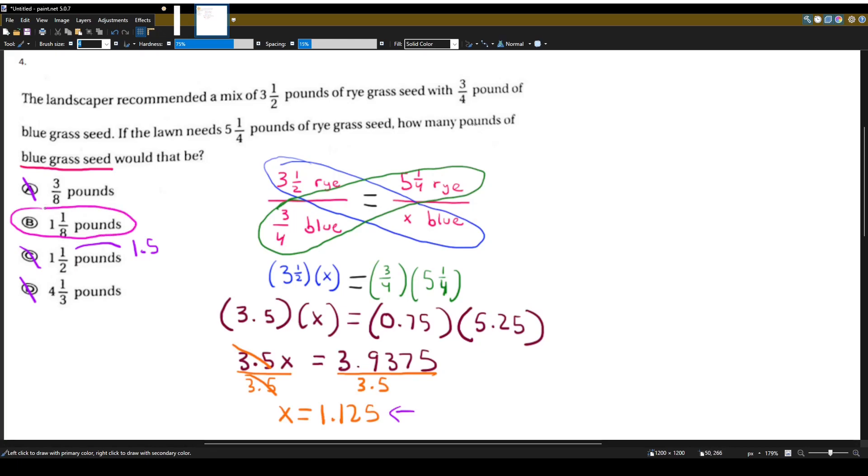And we can double check by putting in our calculator here, 1 over 8. And we'll see that it's actually equal to 0.125, and 1 plus 0.125 equals 1.125.